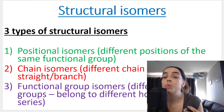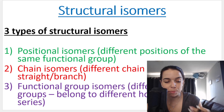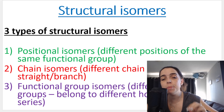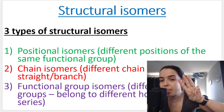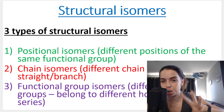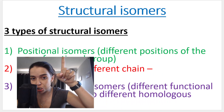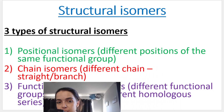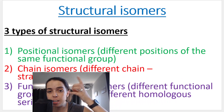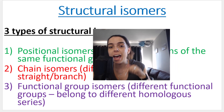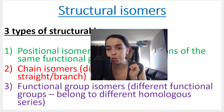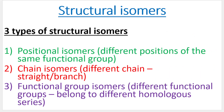That's a basic idea of what a structural isomer is, but we're going to be looking at three different types of structural isomers: positional isomers, chain isomers, and functional group isomers.